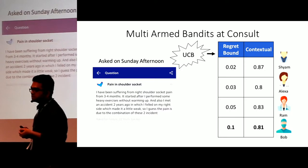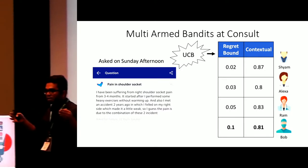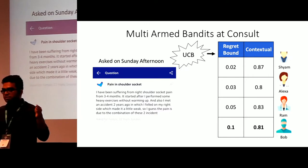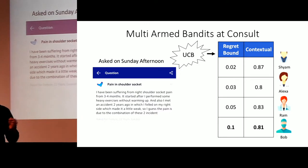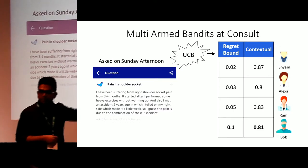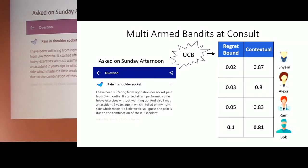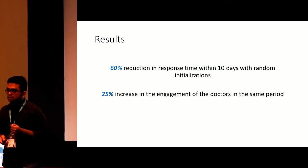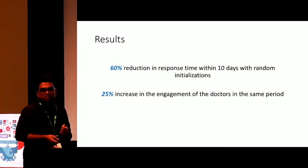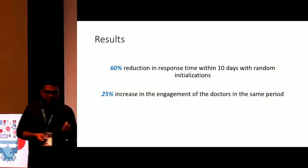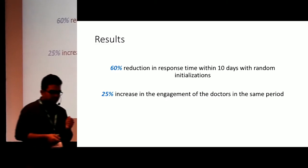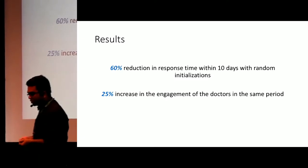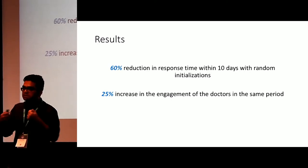This is the second algorithm in multi-arm bandits: Upper Confidence Bound (UCB). If you're familiar with statistics, it's similar to giving an estimate of a parameter as mu plus or minus sigma — the less information you have, the smaller the sample size, the higher the confidence interval, because you're unsure of the parameter value. We implemented this algorithm and saw a 60% reduction in response times within 10 days. Also, we observed a 25% increase in engagement of doctors, meaning we were able to tap into doctors who are actually active on the platform and send more questions to them.